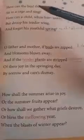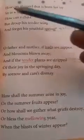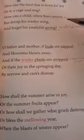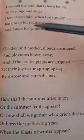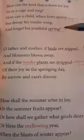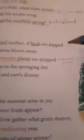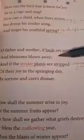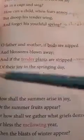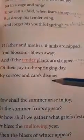First of all I am going to read for you. 'How can the bird that is born for joy sit in a cage and sing? How can a child when fears annoy but droop his tender wing and forget his youthful spring? O father and mother, if birds are nipped and blossoms blown away, and if the tender plants are stripped of their joy in the springing day, by sorrow and cares dismay.'